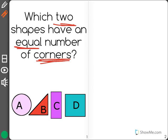So first I'm going to find all the corners in the shapes. I see that A is round. It does not have any corners. I see that B has one, two, three corners.